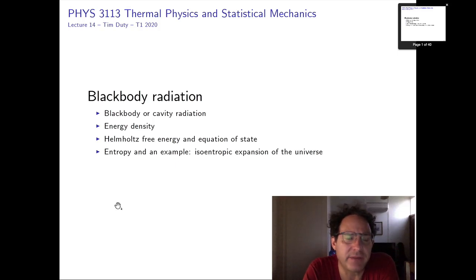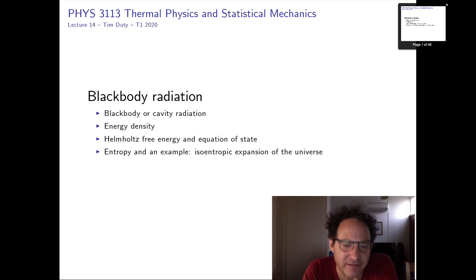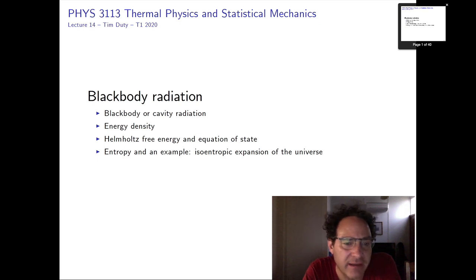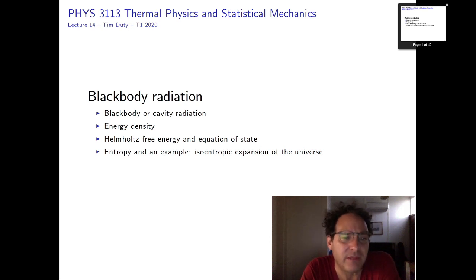Welcome to lecture 14 of Physics 3113. Last lecture we discussed the harmonic oscillator in detail, did statistical mechanics of that, and discussed the relation to photons — in particular to a gas of photons, a so-called Planck gas, or radiation in a cavity, or radiation from a perfect black body, which is an object that acts as a perfect absorber and emitter of radiation.